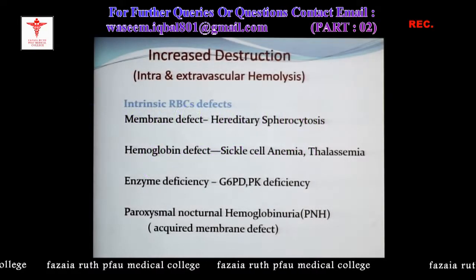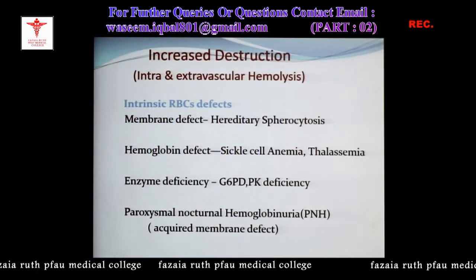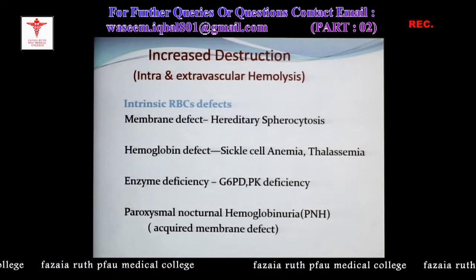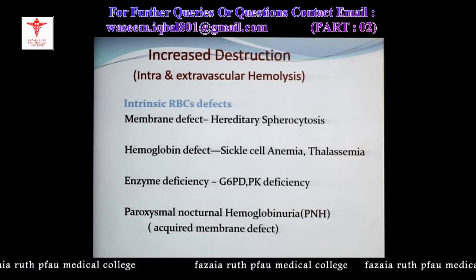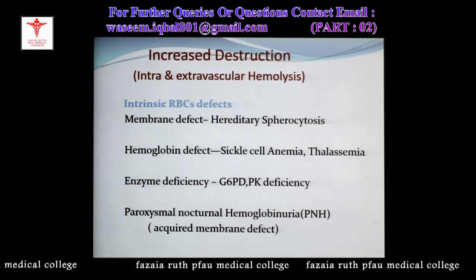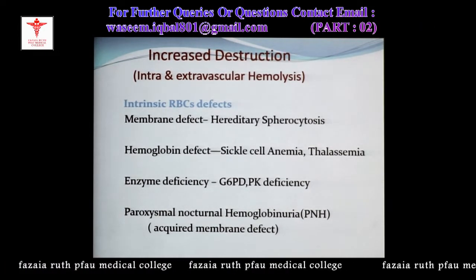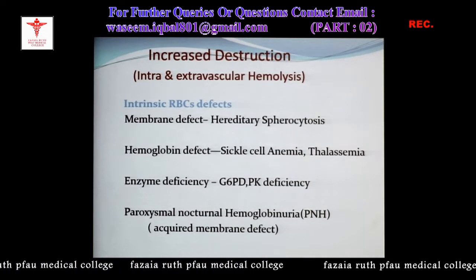Enzyme deficiency — we have two important enzymes, G6PD and pyruvate kinase. They are important in the metabolism going on within the RBCs.